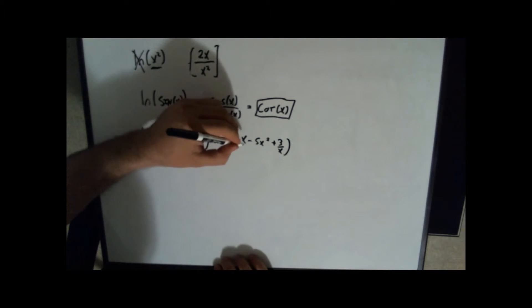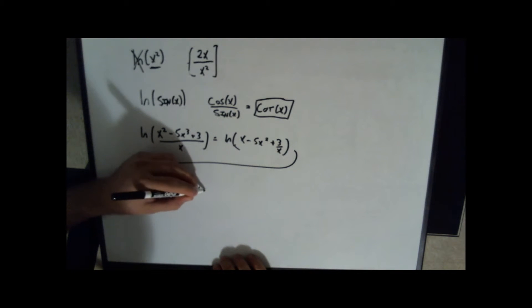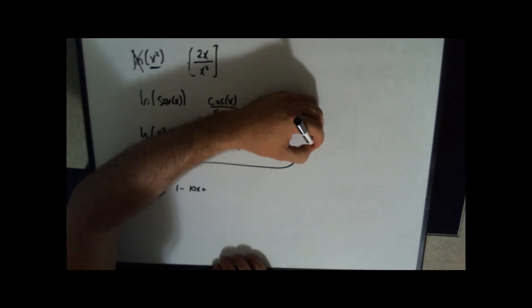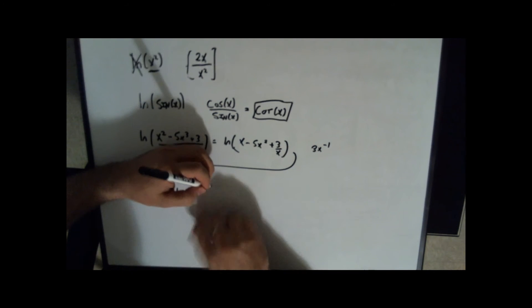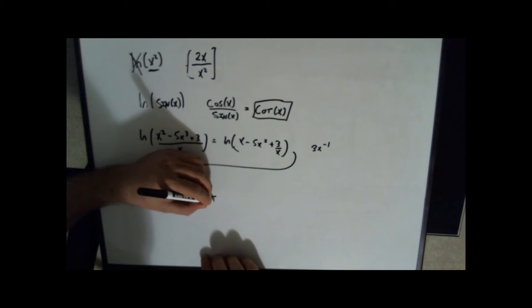And then take the derivative of all of this and say 1 minus 10x plus... And then what's the derivative of 3x to the negative 1? That's going to be negative 3 over x squared.